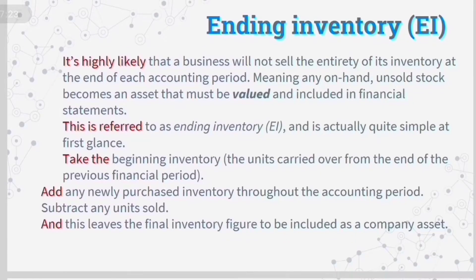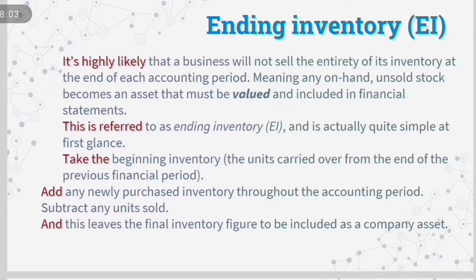Ending Inventory. It is highly likely that a business will not sell the entirety of its inventory at the end of each accounting period, meaning any on-hand unsold stock becomes an asset that must be valued and included in financial statements. This is referred to as Ending Inventory and is actually quite simple at first glance. Take the beginning inventory — the units carried over from the end of the previous financial period — then add any newly purchased inventory throughout the accounting period and subtract any units sold, and this leaves the final inventory figure to be included as a company asset.